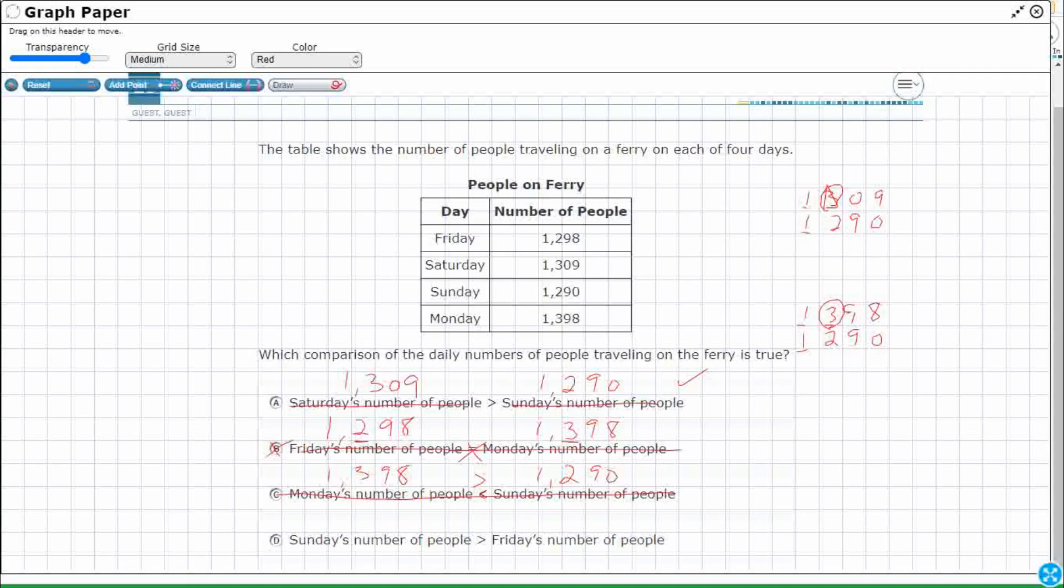Let's check out D. Sunday's number of people 1,290. One of the only problems with this particular tool on the start test is there is no erase button. If I use the reset everything gets erased. There's no eraser if you kind of miss something. So you have to scribble it out if you make a mistake, unless you want to start all over again.